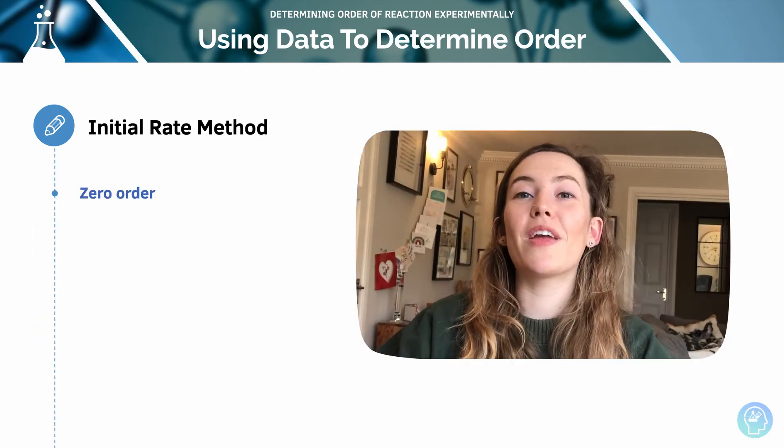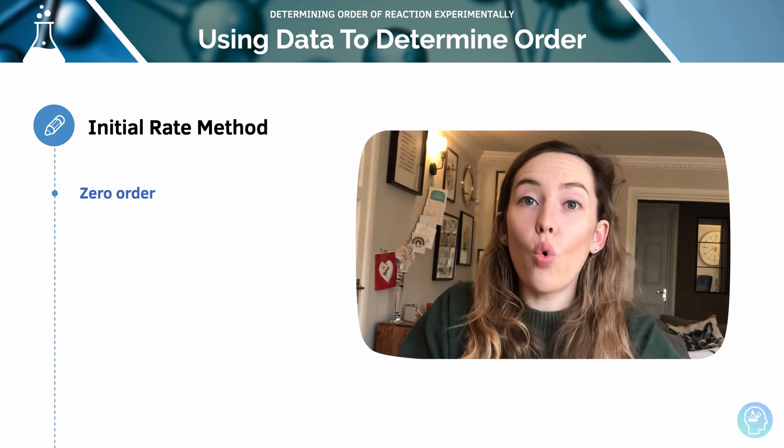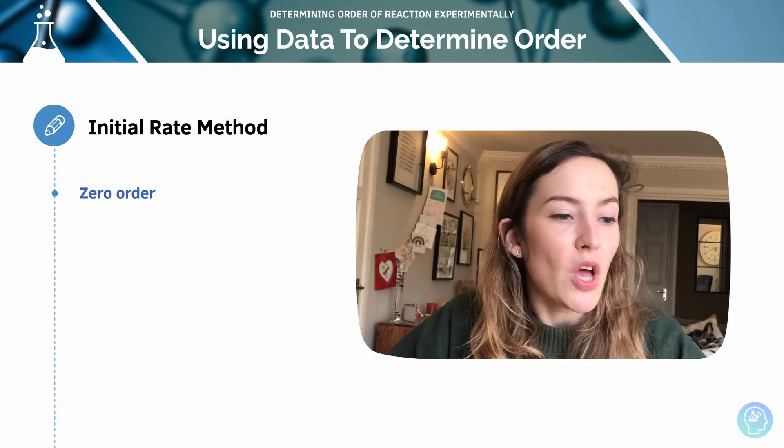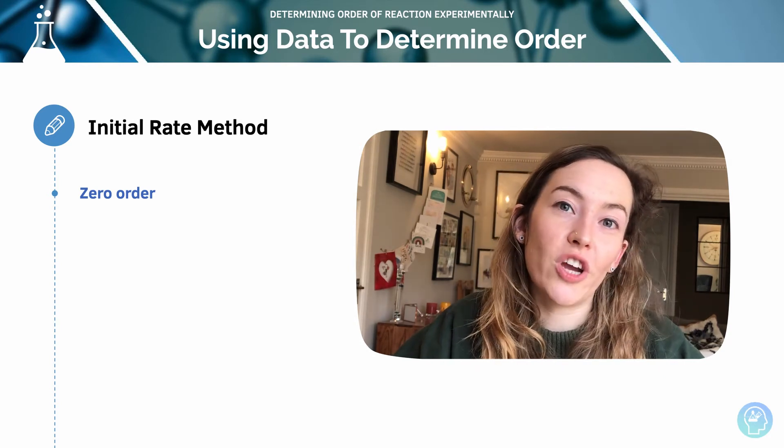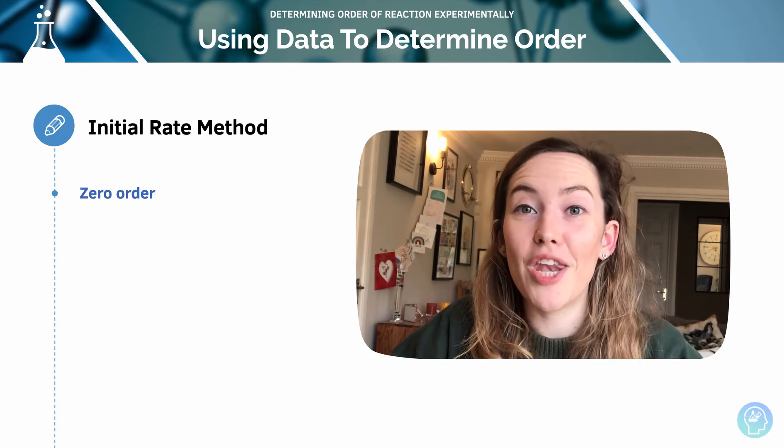By comparing the initial rates, the order of the reaction can be determined. Zero order: a change in concentration has no effect on the initial rates.